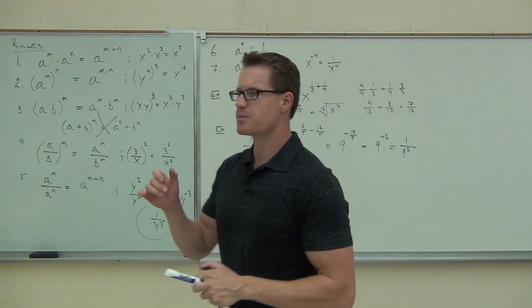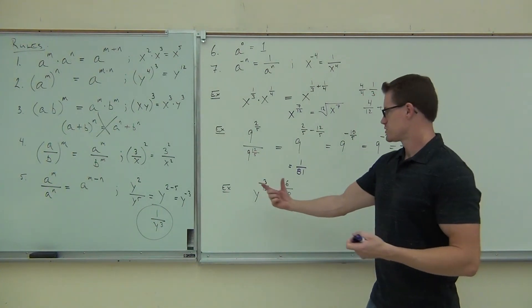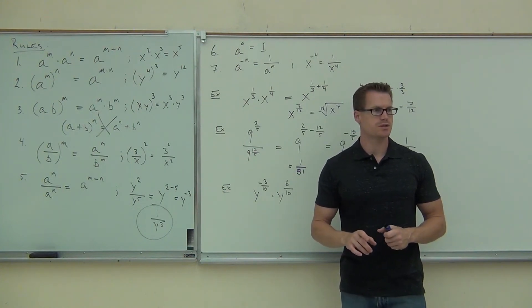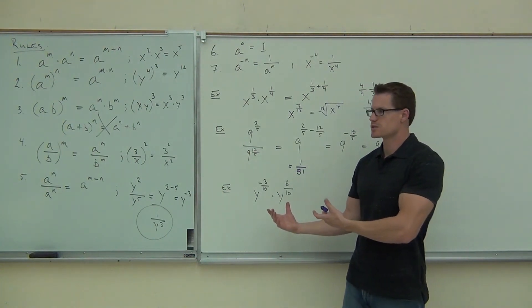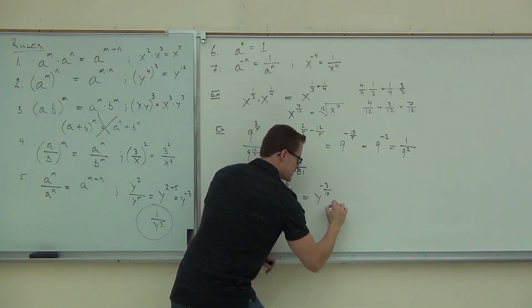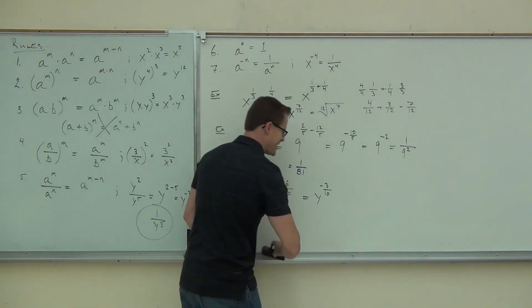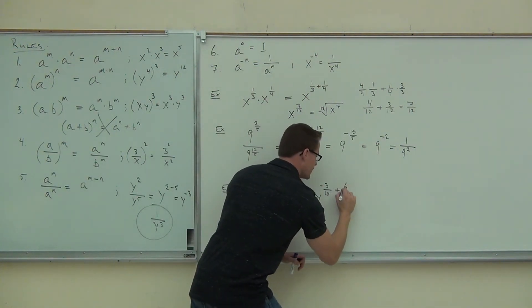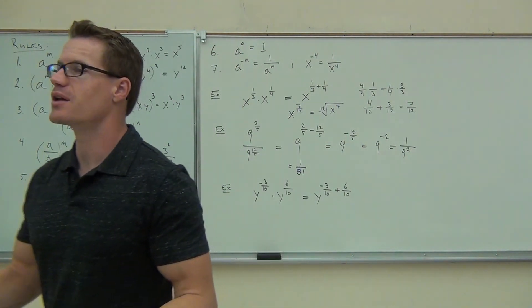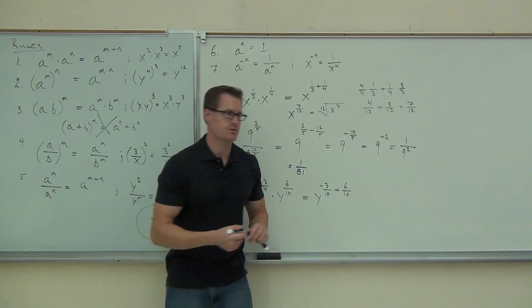Y to the negative 3/10 times Y to the 6/10. Again, what situation are we? Let's look closer at the board. What are we? We're still at number 1. We've got common bases, we're multiplying. That's definitely number 1. What are you going to do with these exponents, folks? Add them. You can add them. Even though one's negative, that's okay. You can still add them together. So we know we're going to have Y to the negative 3/10 times Y to the 6/10. Since we have those common bases, we're multiplying, we know we're going to add the negative 3/10 and the 6/10. What's great is we already have a common denominator. If you don't have a common denominator, you've got to find one. But now that we have negative 3/10 plus 6/10, how much are we going to have? 3/10. Positive 3/10.